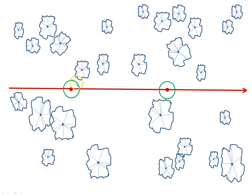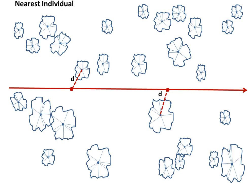We are going to look at a transect that has two sample points — most transects will of course have more than two, but two will be sufficient for demonstration. The first method is the nearest individual method. From our first sample point, we locate the plant closest to that sample point and measure that distance, then repeat for the next sample point. Note that we are measuring the distance from plants to the transect, which is somewhat artificial because it is dependent on the placement of the transect.